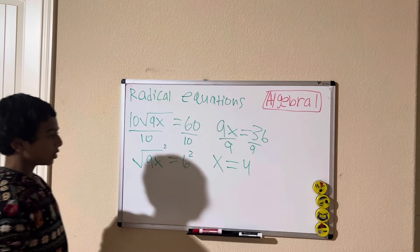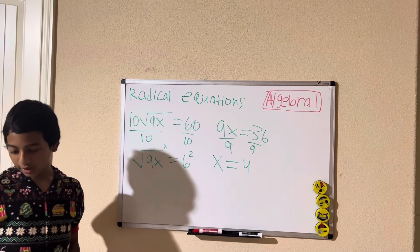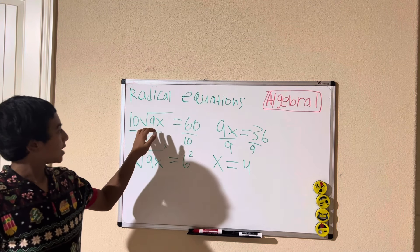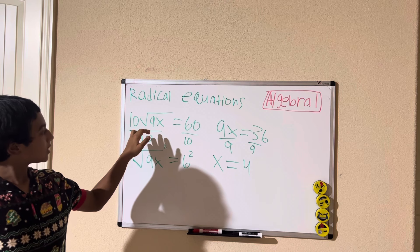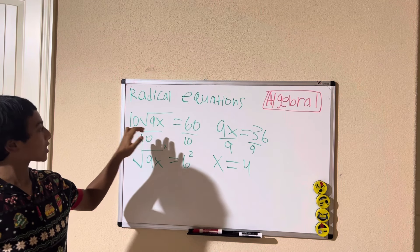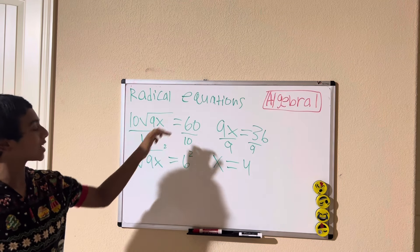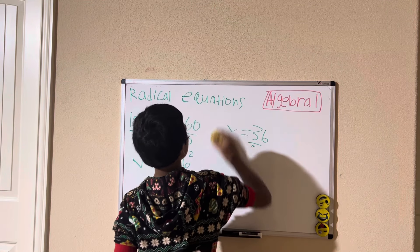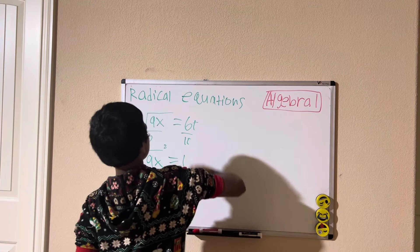If you want to go back and check it: 9 times 4 is 36, the square root of 36 is 6, and 10 times 6 is 60. So that is a correct and only solution.